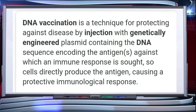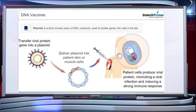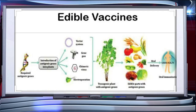With DNA vaccination, cells directly produce the antigen, causing a protective immunological response. Protein vaccines use specific proteins produced by recombinant DNA technology. The Hepatitis B vaccine contains the viral envelope protein — the Hepatitis B surface antigen — whose gene is isolated and expressed in yeast vectors.